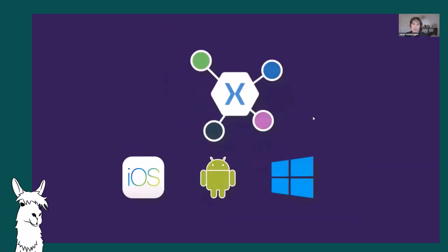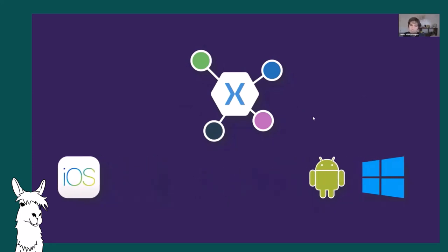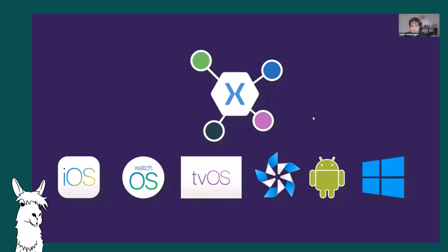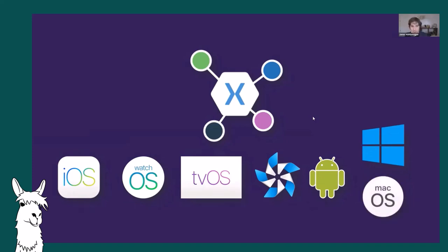Xamarin Essentials started on iOS, Android, and Windows, but since it ships independently, more platforms have been added by the community: watchOS, tvOS, and also Tizen - Samsung's operating system for their TVs, watches, and non-Android phones. The latest release added full macOS support. And since it's open source, there are open pull requests to add WPF, WinForms, and ASP.NET support.